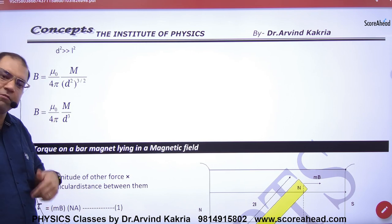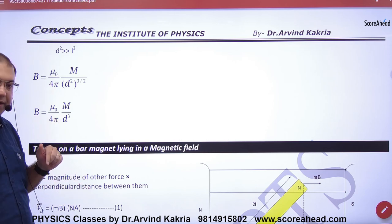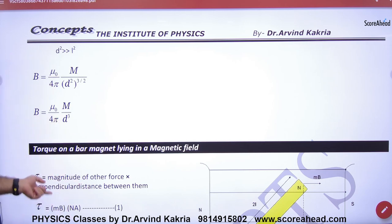You will remember that electrostatics also had such a result. Axial line was 2M by D cube. This is M by D cube.